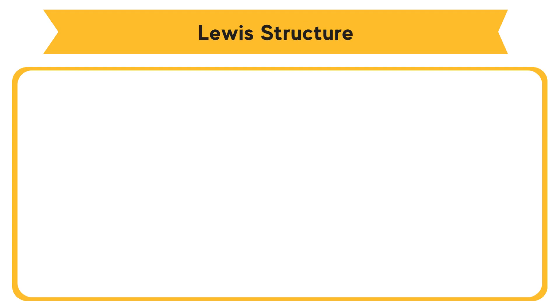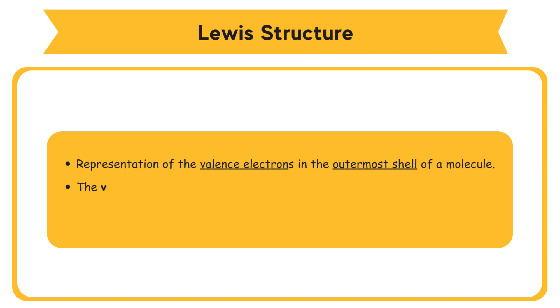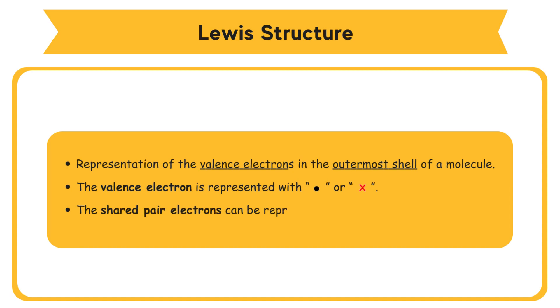This can be shown in Lewis' structure. In the Lewis' structure, the pair of electrons shared is also known as a covalent bond. The Lewis' structure is a very simplified representation of the valence electrons in the outermost shell of a molecule. The valence electron is represented with a dot or X. The shared pair of electrons can be represented by a dash.